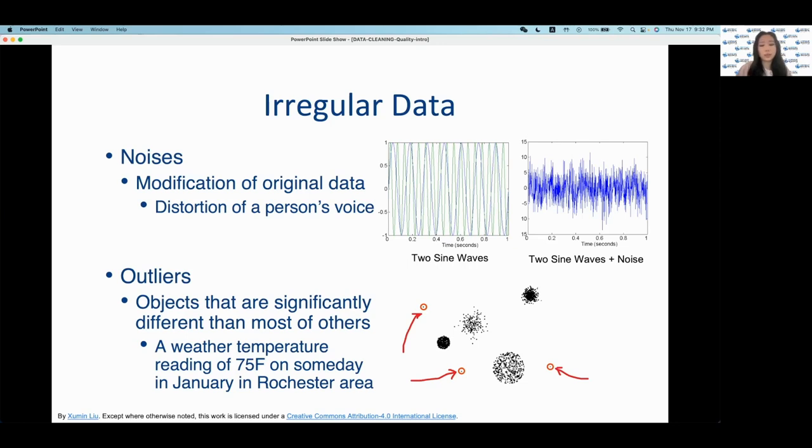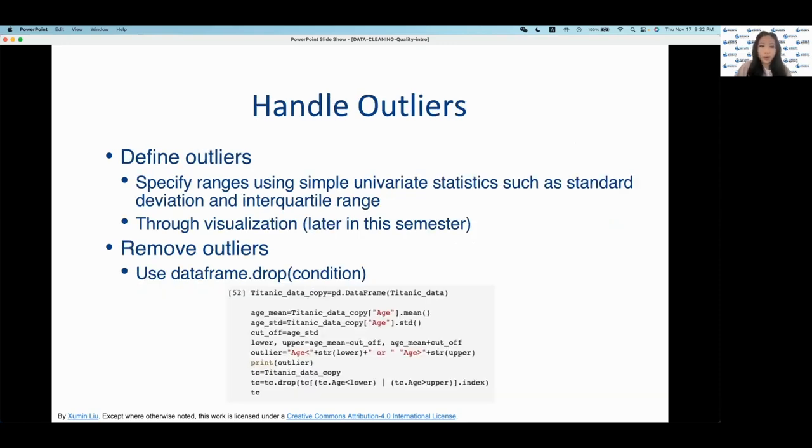And outliers are something to take into account because they can heavily skew the results. So how do you correctly identify which objects are significantly different from the rest? A common way is to follow the principle of trim means, which is to remove those values that are too far away from the mean. You can do this by specifying ranges using univariate statistics such as standard deviation and interquartile range. Another approach is to project the data records to a space through visualization so you can easily spot which ones deviate from the rest of the data population.